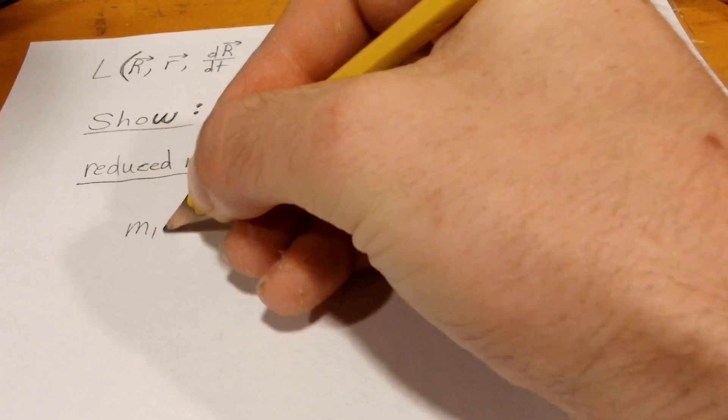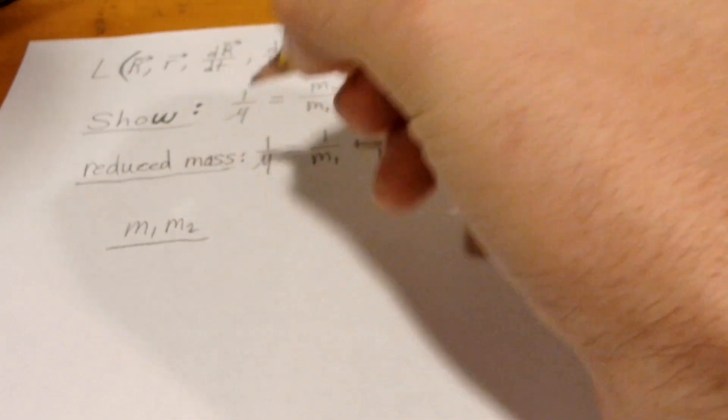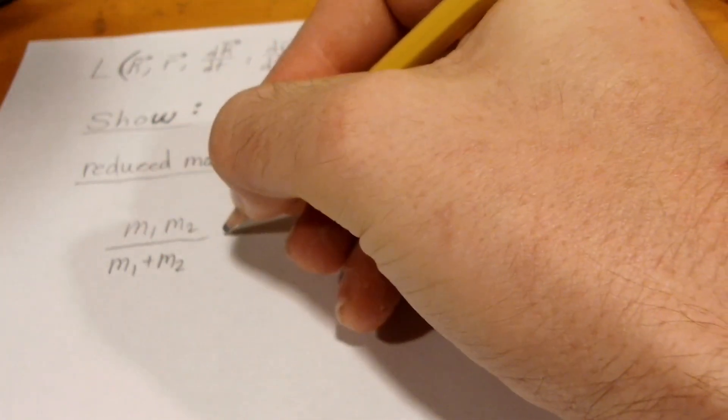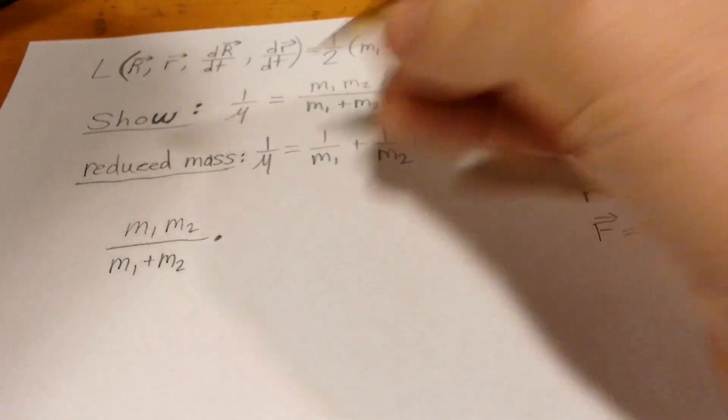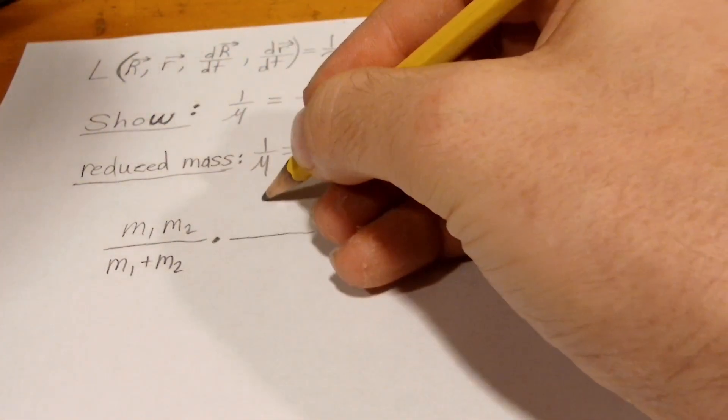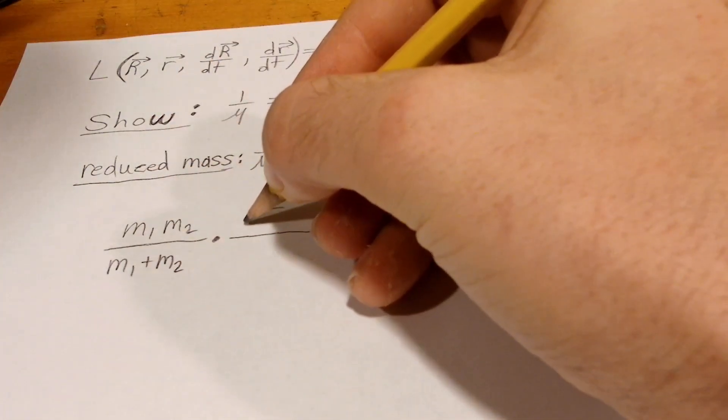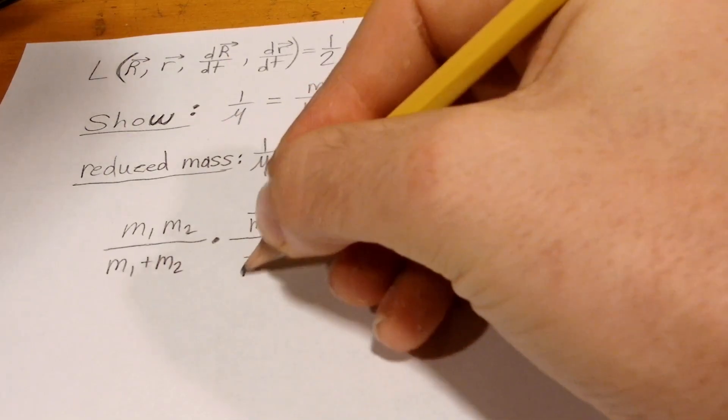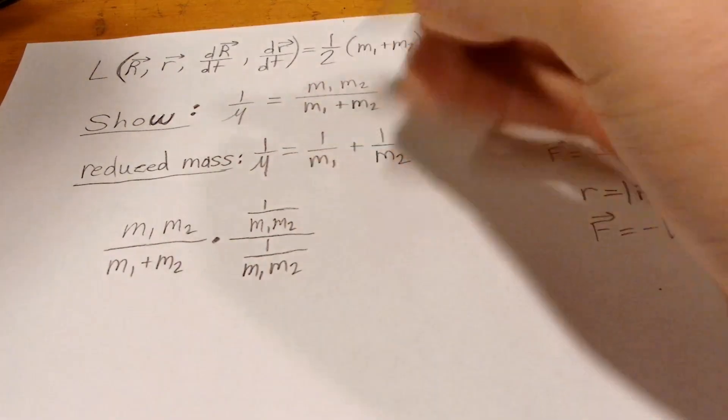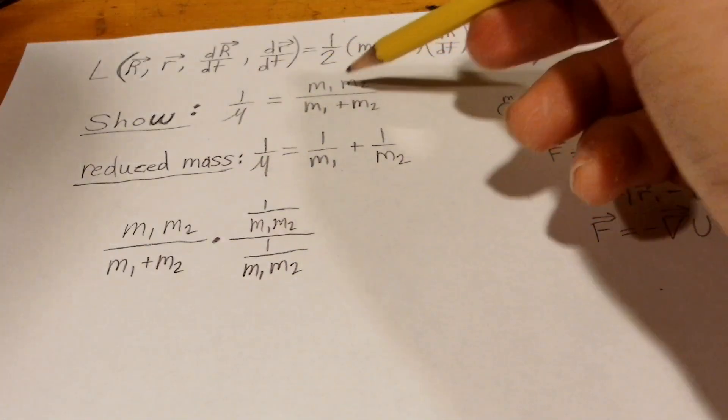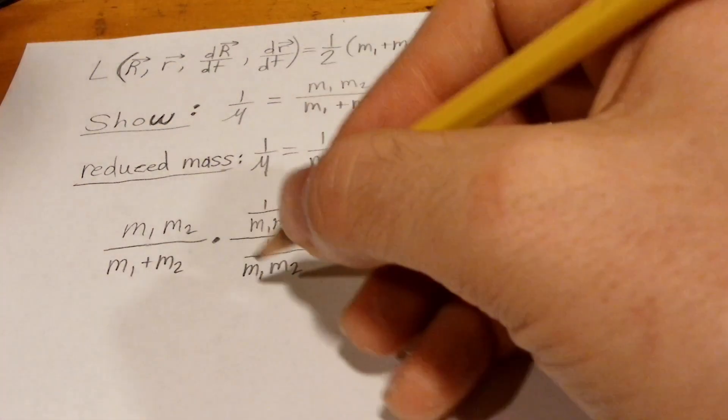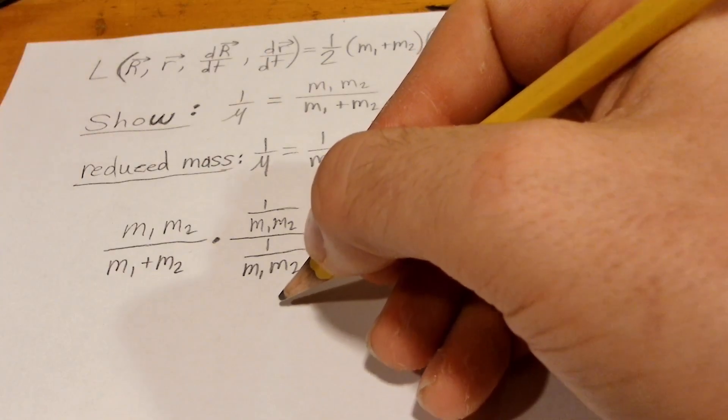And to do that, we just divide m1, m2. We first multiply 1 over m1 times m2, m2. And all I'm doing here is just multiplying this equation by 1, because this is equal to 1.